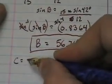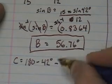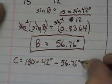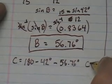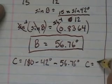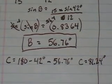Well, C is just going to be 180 minus angle A minus angle B. And that gives me angle C equal to 81.24 degrees.